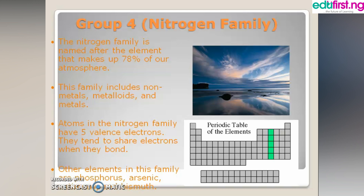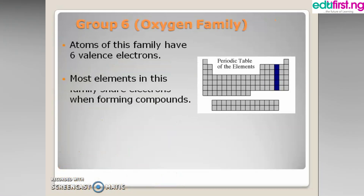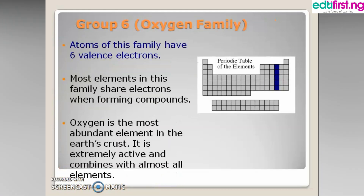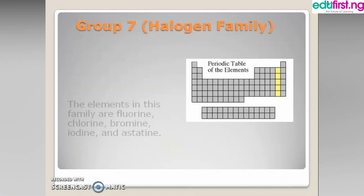Group 6 elements are the oxygen family. They have six valence electrons and also share electrons when forming compounds. Oxygen is one of the most abundant elements on earth. It is extremely reactive and combines with almost all elements to form oxides — that is why we have amphoteric oxides, acidic oxides, basic oxides, and many other types of oxides.